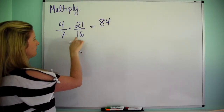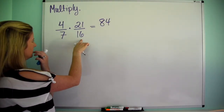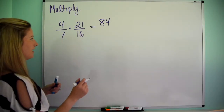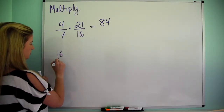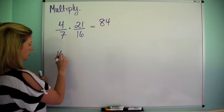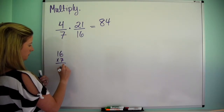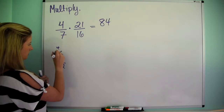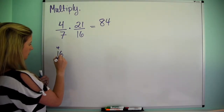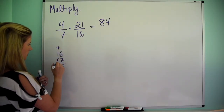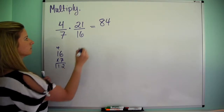And then 7 times 16. So 7 times 6 is 42. 7 times 1 is 7, plus 4 is 11. So 112.